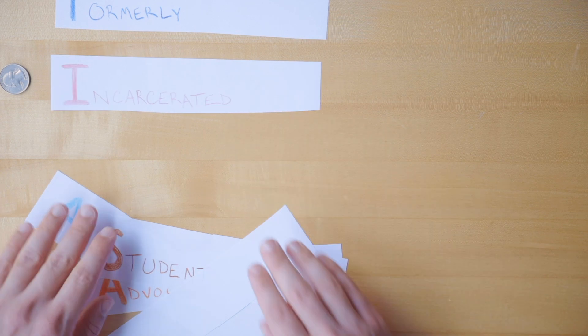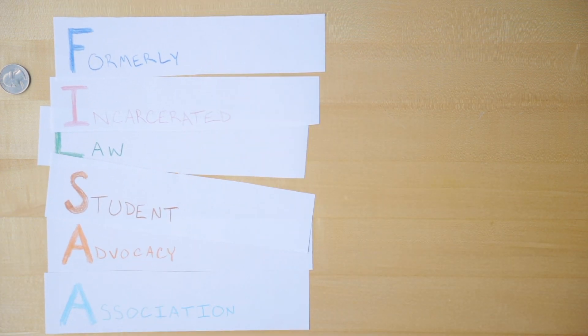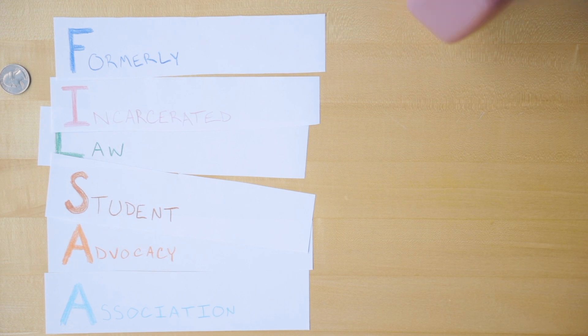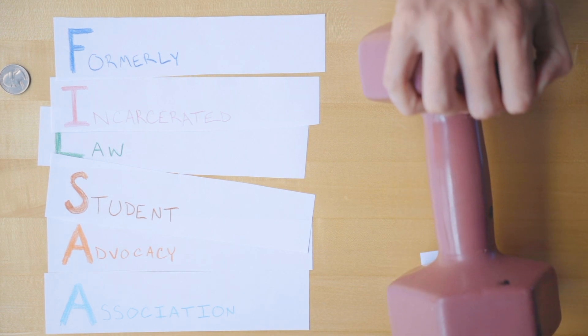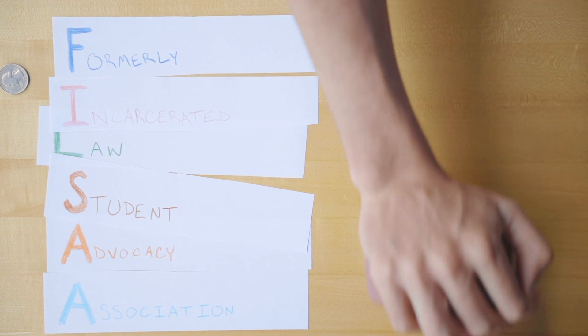Here at CUNY School of Law, we have a student organization called FILSA. FILSA seeks to correct this imbalance by advocating for formerly incarcerated and justice-impacted folks to be accepted into our school and by supporting them academically and pragmatically while they're here.